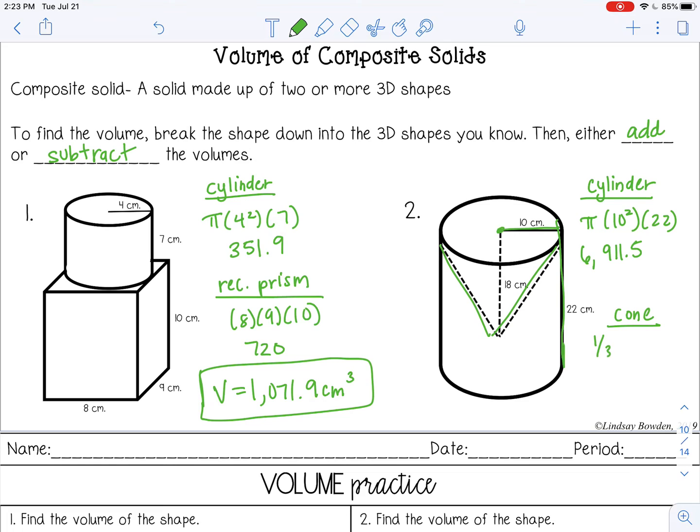And then the cone is one third pi r squared h. So my radius is still 10, but the height of the cone is 18. And that gives me about 1,884.95 or 96. And remember the less you round on these individual ones, the more accurate your final answer is going to be.